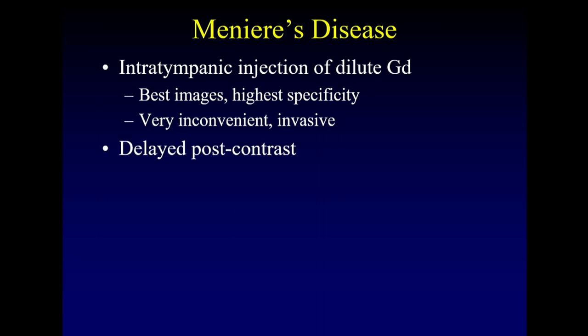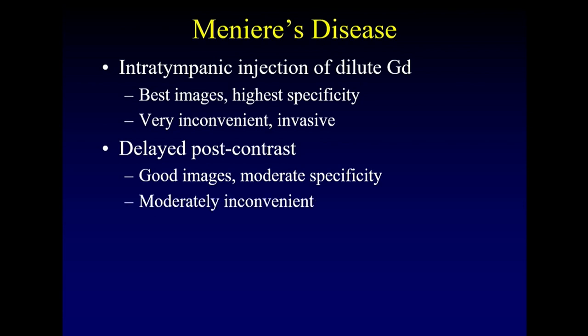If you don't like that approach, you can do delayed post-contrast imaging: give intravenous contrast and wait 4 hours. Again, the perilymph preferentially takes up the gadolinium, and you can do high-resolution FLAIR imaging to get good images. They're not as nice as the intratympanic injection and have only moderate specificity. This is only moderately inconvenient because you're waiting 4 hours.